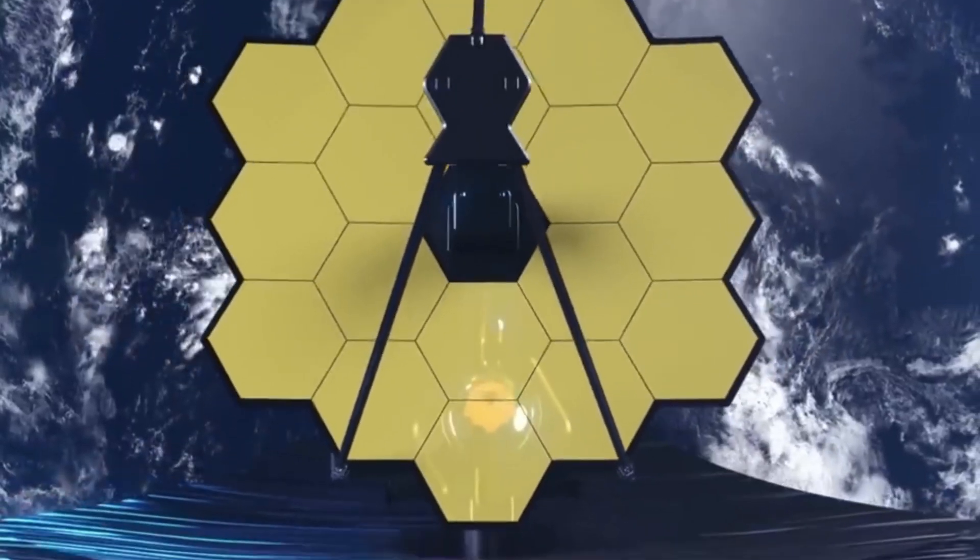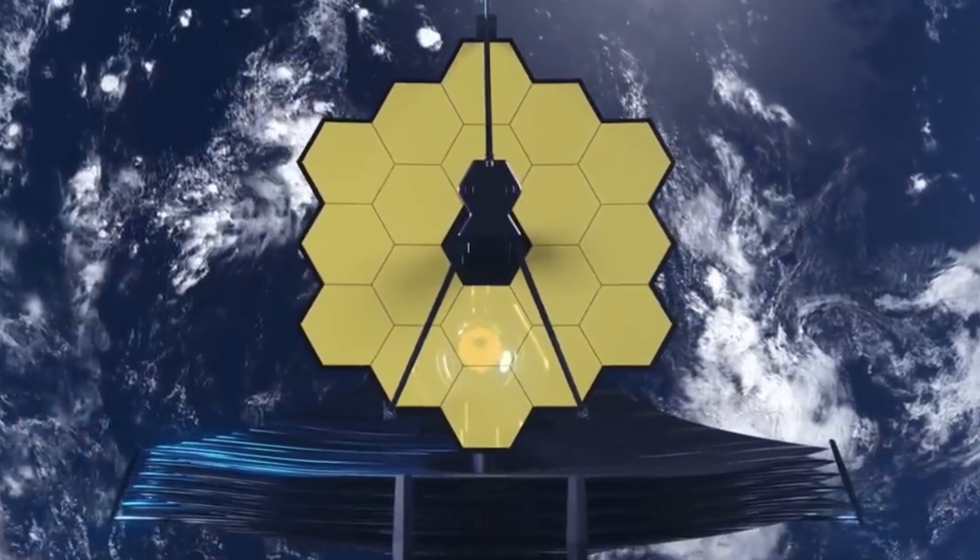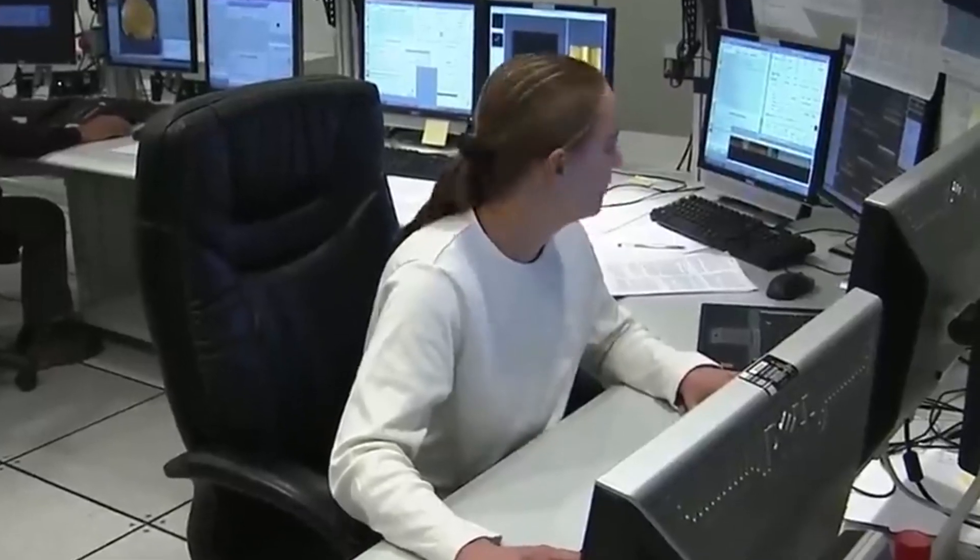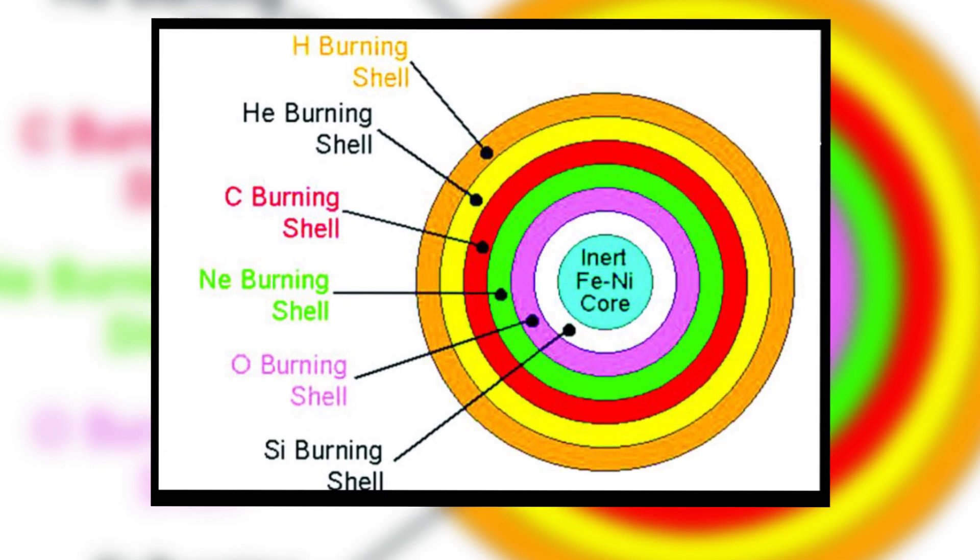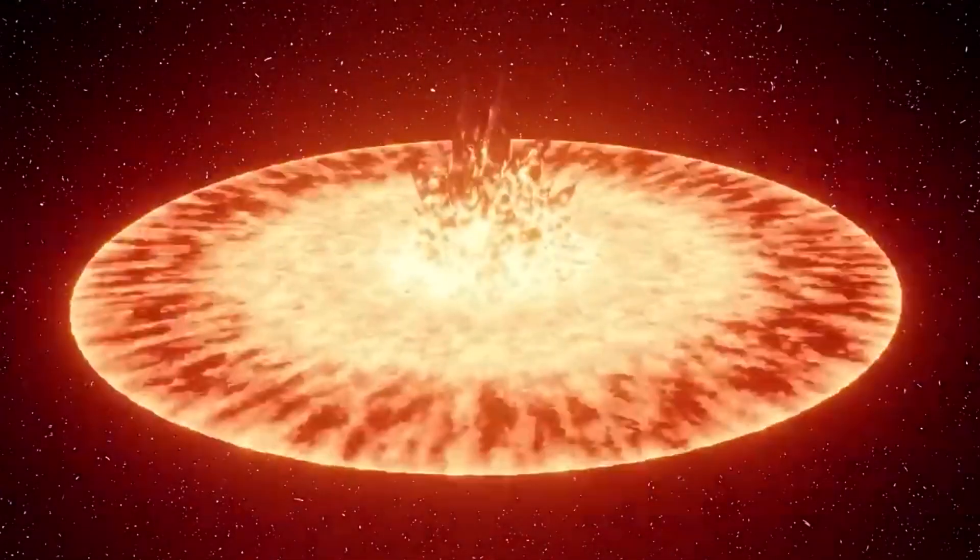Furthermore, with the help of the JWST's potent spectroscopic sensors, like the Mid-Infrared Instrument, scientists are able to peek deeply into Betelgeuse's core, providing information on the star's internal structure and evolutionary stage.